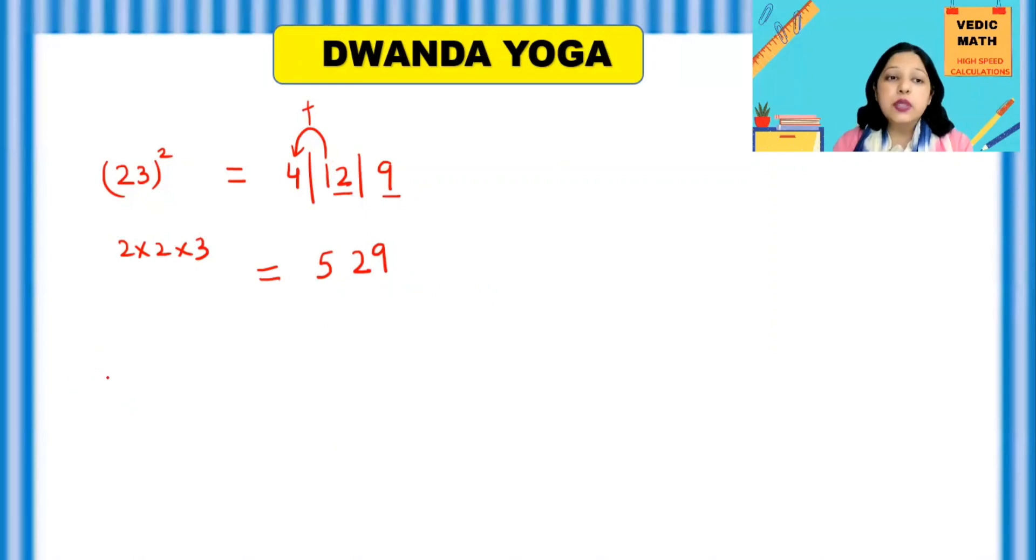Now let's do the question. 24 square by our Vedic method. 24 square, 2 square is 4. Leave the space in the middle. 4 square is 16 and 2 into 2 into 4. That is your 16 again in the middle.